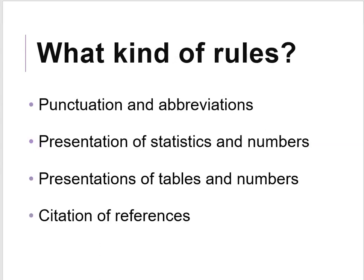So what kind of rules does APA cover? It covers the rules of what punctuation and abbreviations we use, how we present statistics and numbers in papers. As you're reading the papers in the results section, you'll notice they're formatted in a very similar way — and that's thanks to APA. And then how we present tables and graphs and numbers. And then finally, the most important part is how we cite references — so this is like the bibliography, and this is what we're going to focus on.